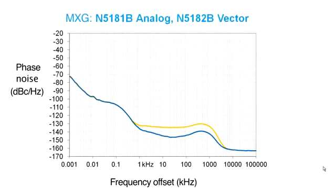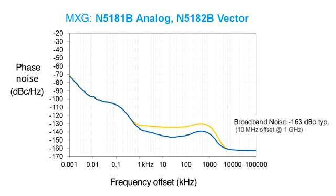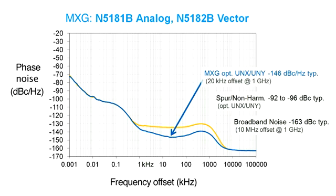With the X-series MXG, you can start with phase noise and distortion so low the signal is effectively perfect. This indicates baseline performance and provides a reference for troubleshooting and for allocating pieces of the error budget.